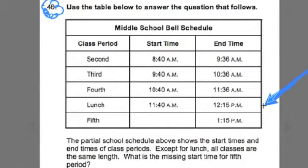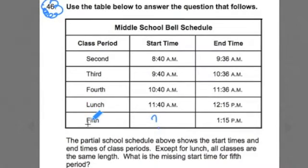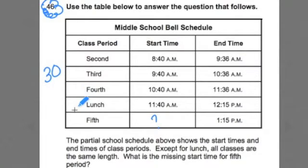So do that now. Pause this video, read it over, scan over the information there. I'm hoping that you see that we have a schedule here — a class schedule, or a school schedule with class periods and start times and end times. And maybe you also noticed that there was a missing start time for the fifth period. So I'm literally following the instructions: it says use the table below to answer the question that follows. Give yourself 30 seconds to scan over that table or diagram to pull out that background information.